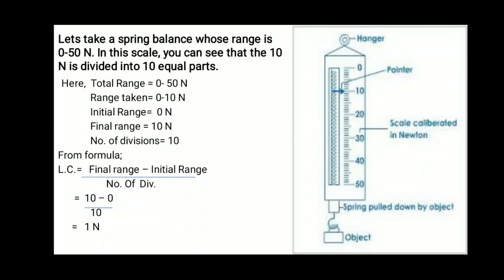So, for instance, we are taking range from 0 to 10 Newton. Here between 0 to 10, initial range will be 0 and final range will be 10, and the number of divisions between 0 and 10 are 10.